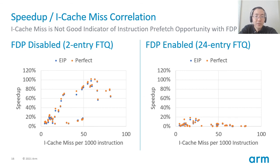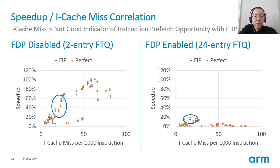The last data is the correlation between iCache MPKI and speedup by prefetchers. When FDP is disabled, we saw significant speedup for traces with high iCache MPKI. However, with FDP enabled, the same traces show really limited performance uplift. On the other hand, we saw good performance improvement close to 20% for traces with moderate iCache miss count. These traces contain hard-to-predict branches that prevent FDP from prefetching future control flow accurately. Future instruction prefetch research may need to focus on this type of application, which cannot be efficiently predicted by FDP.